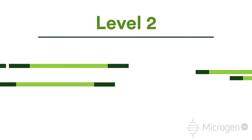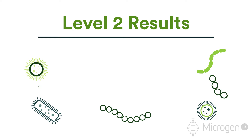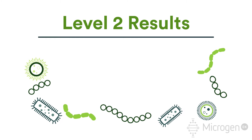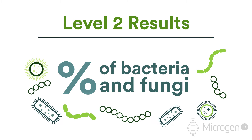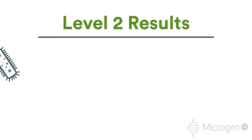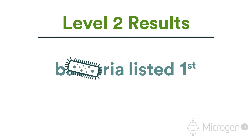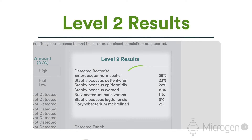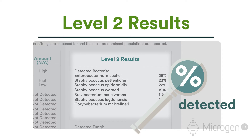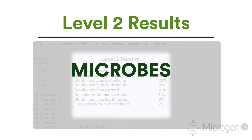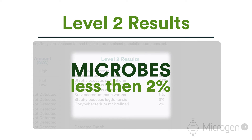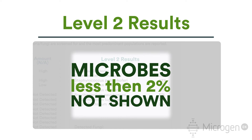Level 2 results. Our level 2 testing identifies genetic signatures and the estimated percentage of bacteria and fungal organisms present in the specimen. All detected bacteria are listed first in order of prominence. To the right of each bacteria, you can review the percentage detected. Our level 2 results have a 2% cutoff, meaning that any microbes that make up less than 2% of a level 2 results panel will not be shown.